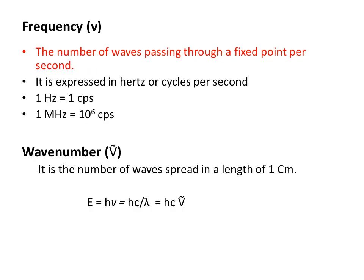Another parameter is frequency (ν) — the number of waves passing through a fixed point per second. It is expressed in hertz or cycles per second; one hertz equals one cycle per second, and one megahertz equals 10⁶ cycles per second. Another parameter is wave number — the number of waves spread in a length of one centimeter, meaning how many waves are accommodated in one centimeter of length.